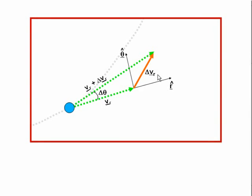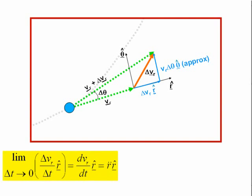The magnitude of the radial component of the vector delta-vr is just delta-vr in the direction of the unit vector r-hat, and the magnitude of the tangential component is vr delta-theta in the theta-hat direction. The rate of change of the radial component of delta-vr is the limit as delta-t tends to 0 of delta-vr over delta-t times r-hat, which equals dvr/dt r-hat, which equals r-double-dot r-hat. This corresponds to the first term in our equation for acceleration in polar coordinates.